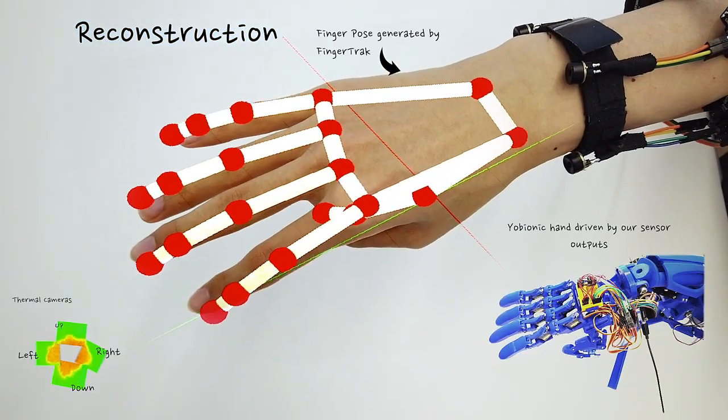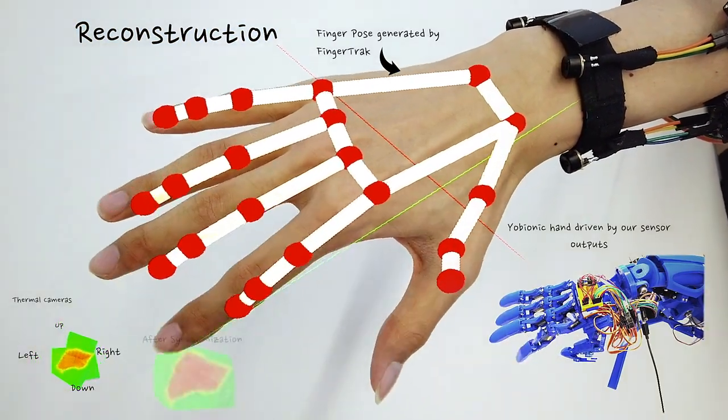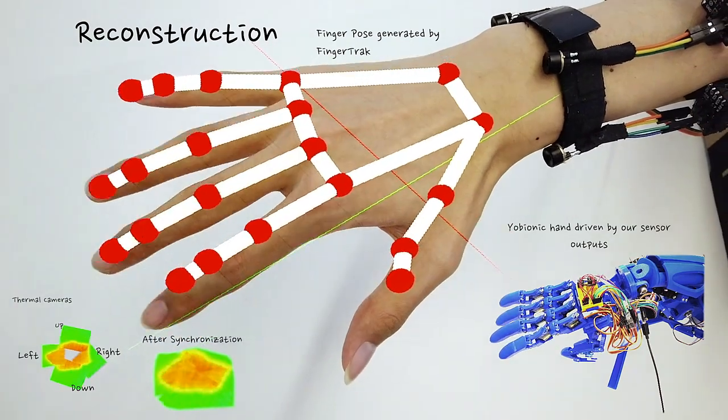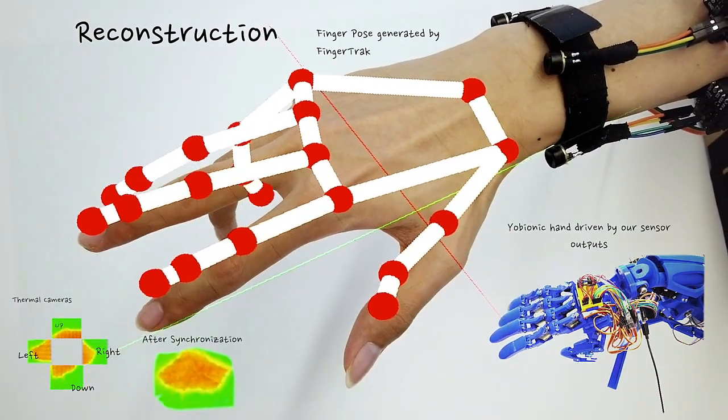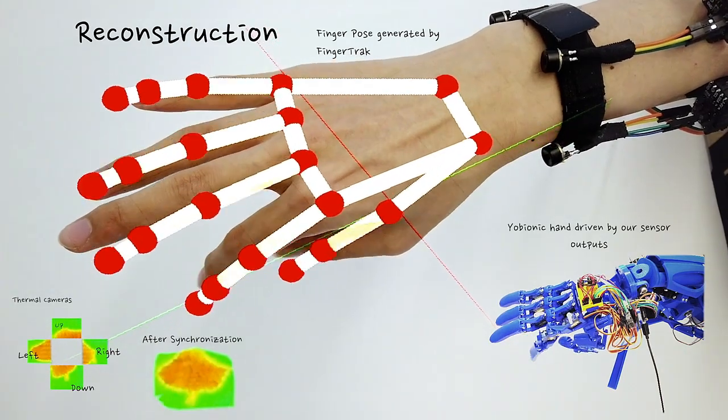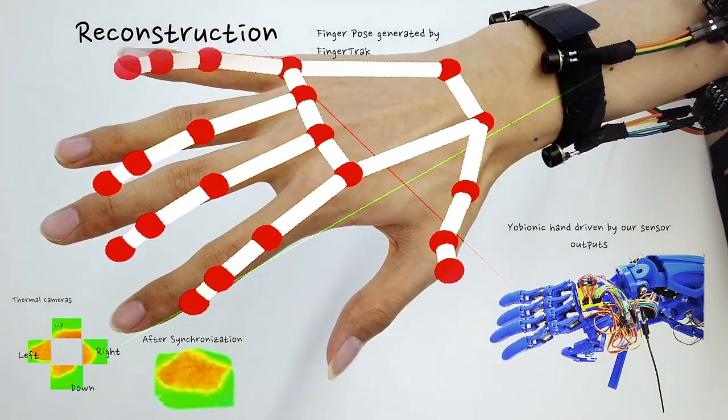On the main screen, the hand with red joints is the estimated hand pose given by our model and superimposed on the real hand. In the bottom left corner are four-stitched thermal camera images captured by the cameras on the wristband.